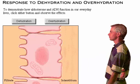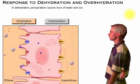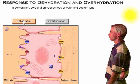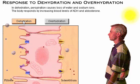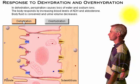Now let's look at two common conditions to demonstrate how these two hormones function in everyday life. In dehydration, which could be caused by hot weather, perspiration causes the body to lose both water and sodium. In response, both ADH and aldosterone are released. They stimulate the kidney to conserve body fluid by increasing reabsorption of water and sodium ions from the filtrate. Therefore, the volume of filtrate entering the medullary collecting duct is reduced, so urine volume decreases.